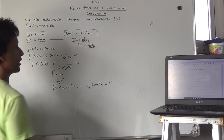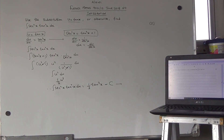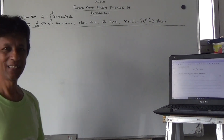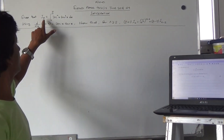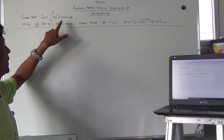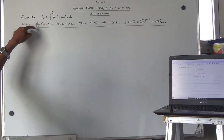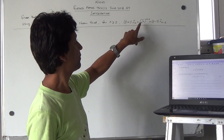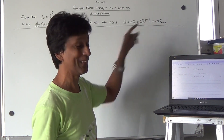Therefore the answer to part one is that the integral of sec²x · tan²x dx = (1/3)tan³x + c. This is the first part — there are two parts. For the second part, we need to show that for n ≥ 2, (n+1)·Iₙ = (√2)^(n−2) + (n−2)·Iₙ₋₂, using d/dx(sec x) = sec x tan x.